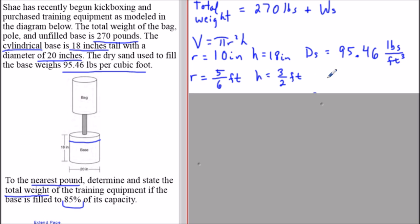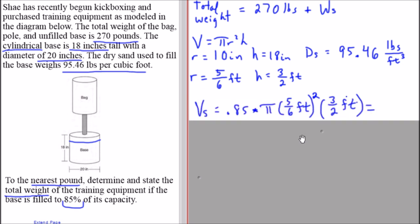I'm writing it in fraction form because we're not going to round until the very end. To find the volume of sand being added to the base, we have to be careful: the amount of sand is only filling it 85%. So the volume of sand is pi r squared times h times 0.85.